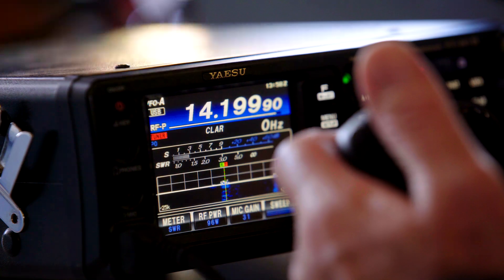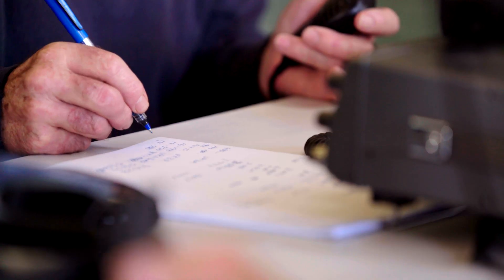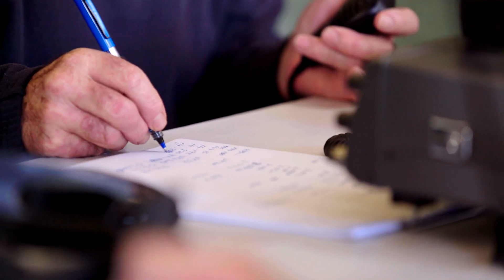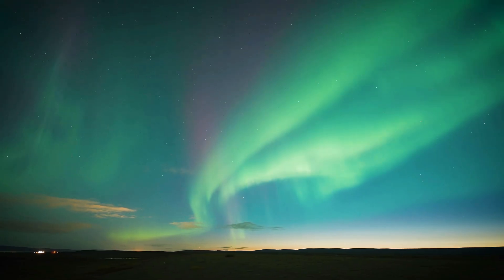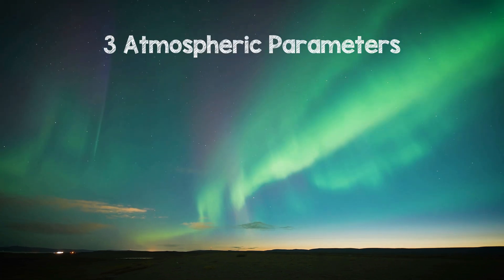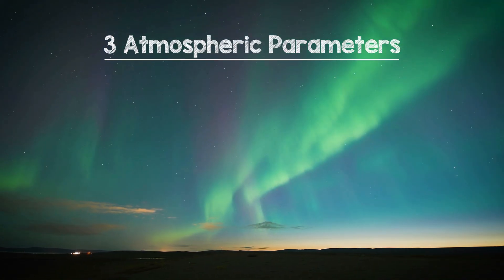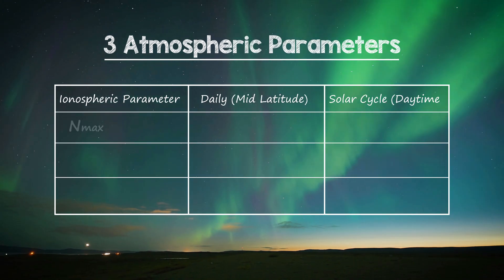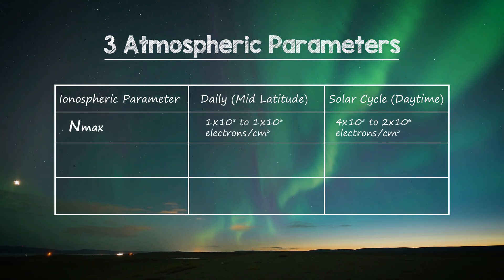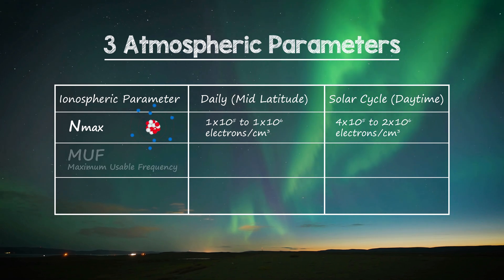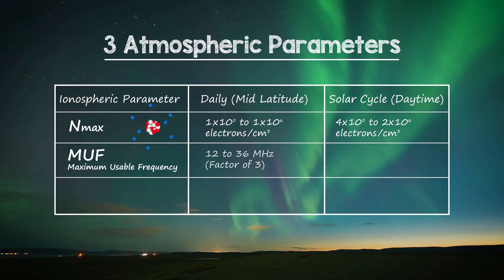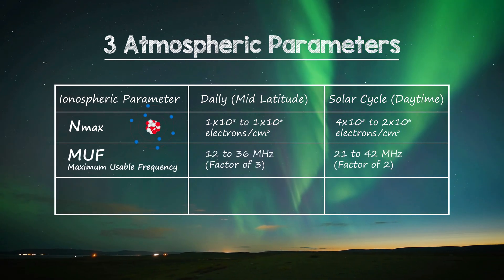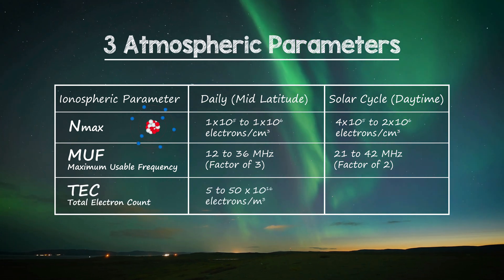For HF communications, radio waves propagate from one location to another by bouncing off the ionosphere. There are three important atmospheric parameters with daily and solar cycle variability: N-max, a measure of electron density; MUF, or the maximum usable frequency; and TEC, which is the total electron count.